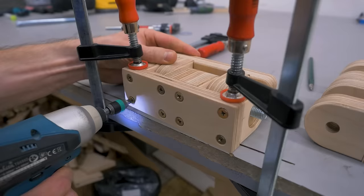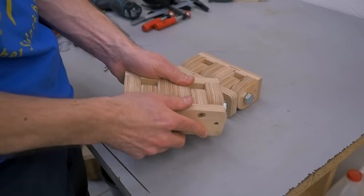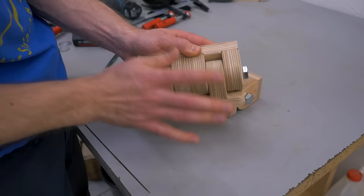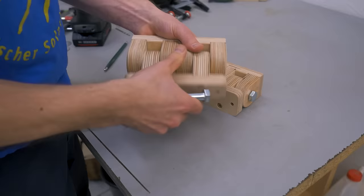Got the two beefy hinges finished. They move freely, have basically no radial play, but a little bit of axial play. But that's good so it won't end up binding. And I can still relatively easily take it apart again for assembly later.